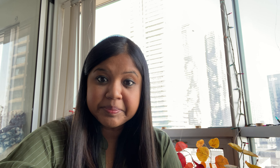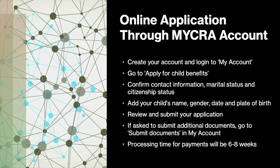Now let's get to the process of applying for CCB — when and how to apply. As soon as you meet all the eligibility criteria discussed, you can go ahead and apply. There are two methods: first is online through My CRA Account, and the second is by mail. The mail method is the most preferred for newcomers because you've just landed and don't yet have a CRA account, so it's the easiest and fastest way.